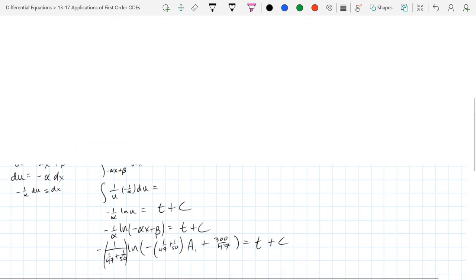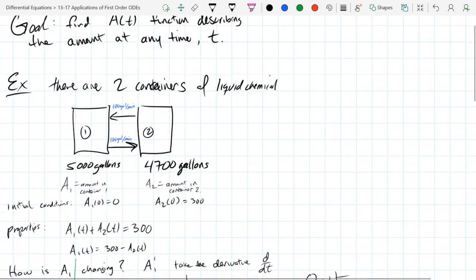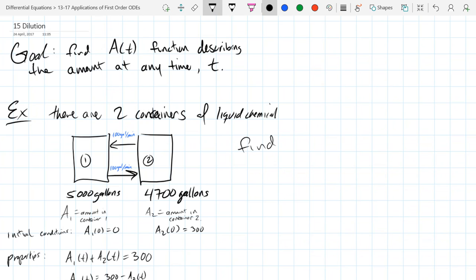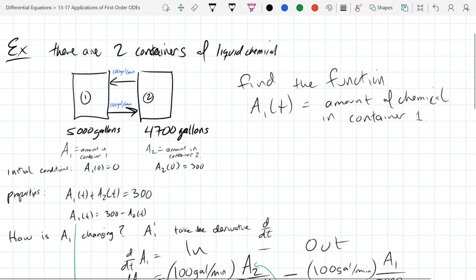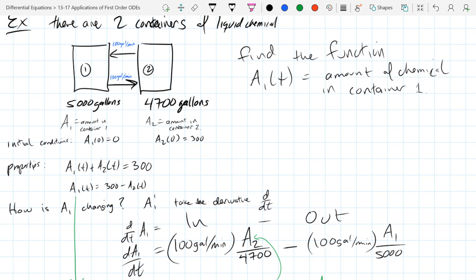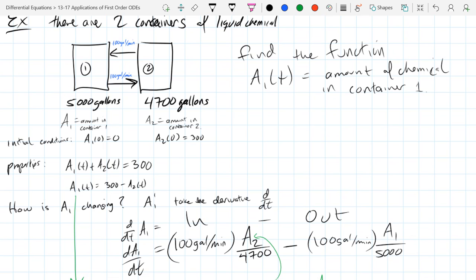All right. So that's our first word problem. So the answer would be A1 and A2. I didn't really ask a question, so there's really nothing to answer. Find the amount in container one, and A2 would just be 300 minus that function. So the next one I've written out in words.